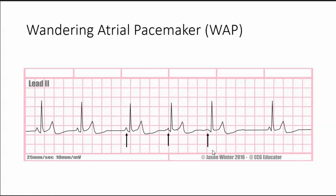The QRS is normal. Since the P waves are variable, the PRI is going to be variable. Both the atrial and ventricular rates are about 60 to 100 beats per minute, but may be slower — ours is 60 beats per minute. The rhythm is mostly irregular, but the main thing to look for are the different P waves, and again there need to be at least three different types.